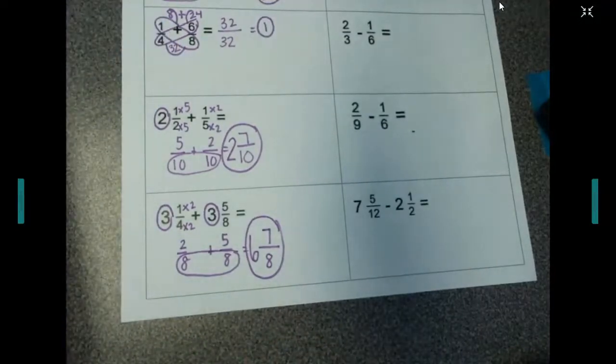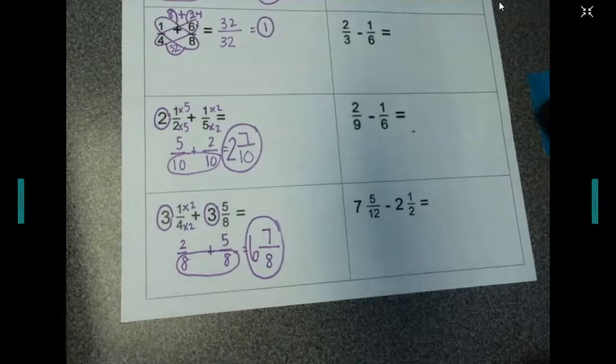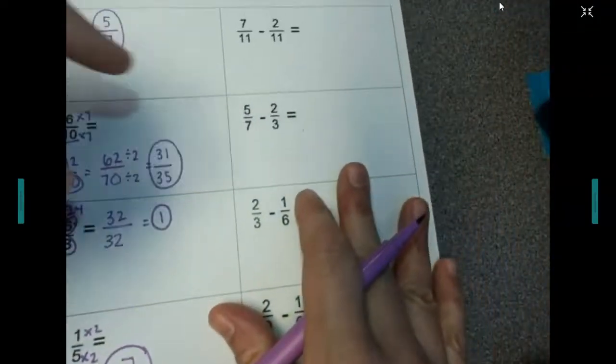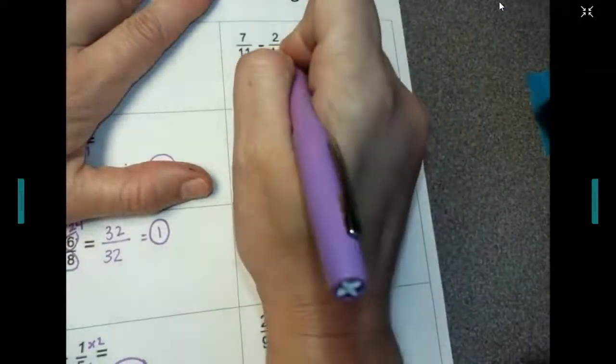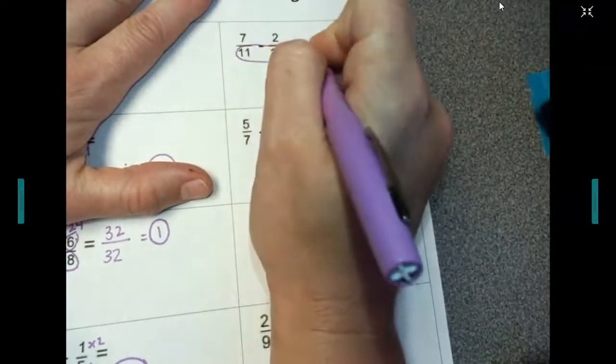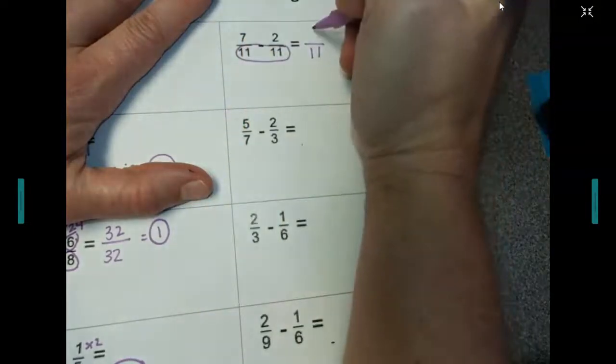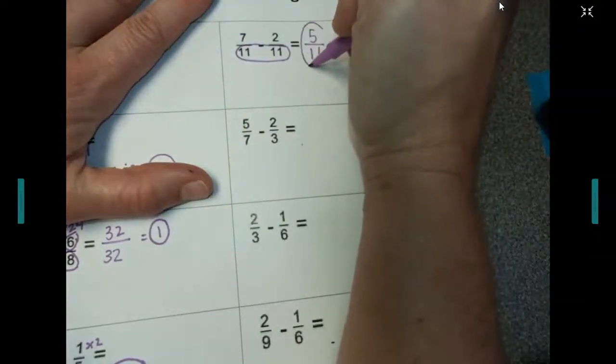So that's how you do adding. Subtracting is the same thing, but we're just subtracting the numbers. I'm going to start off with a common denominator already. So I'm going to put 11 at the bottom. 7 minus 2 is 5. So I get 5 over 11.